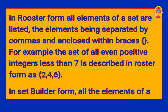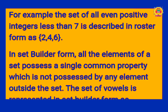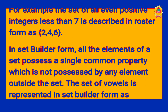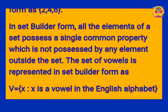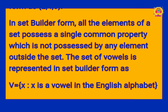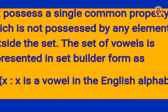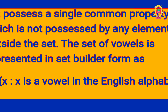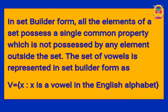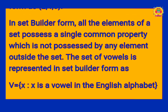In Roster form, all elements of the set are listed, with elements separated by commas and enclosed within curly brackets. For example: {2, 4, 6}. In Set Builder form, all elements of a set possess a single common property which is not possessed by any element outside the set. The set of vowels is represented in Set Builder form.